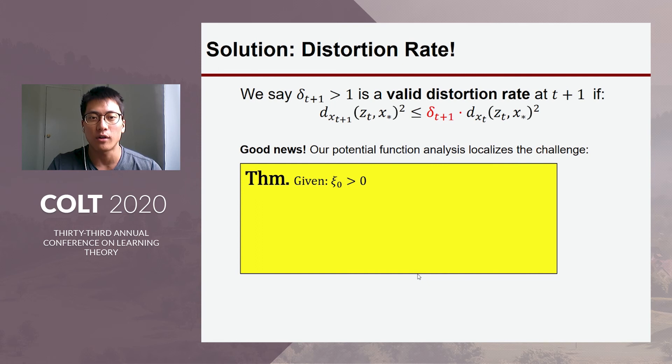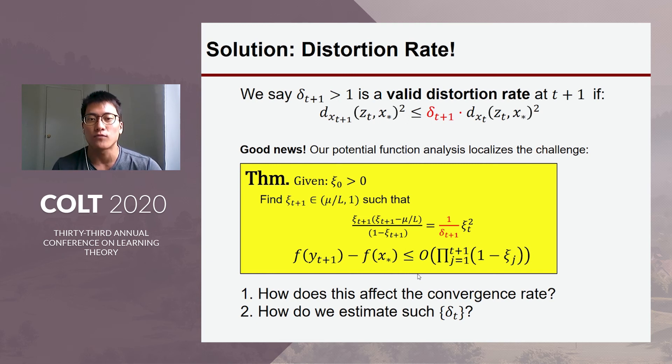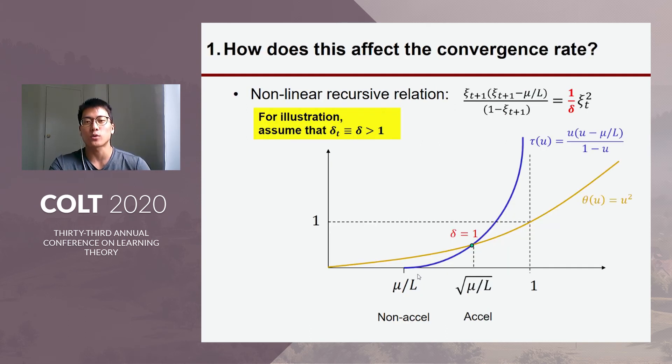Then the theorem it reads as follows. It just exactly matches the Euclidean case, modulo the appearance of δ_{t+1} in the recursive relation. Then we get the same convergence rate. So, the remaining question is to see how this appearance of δ in the non-linear equation affect the convergence rate. And second question is how we can estimate such deltas.